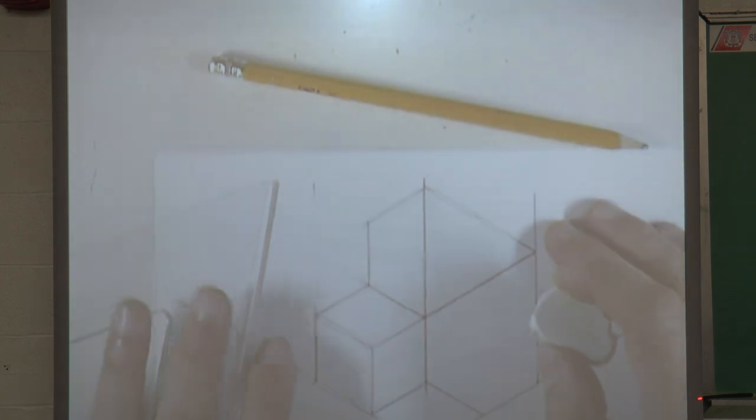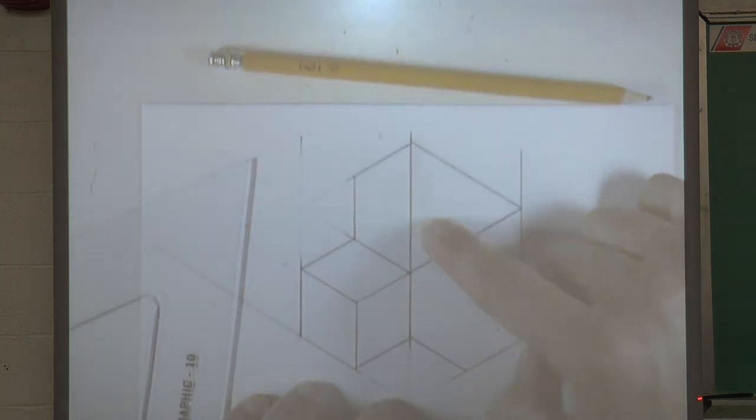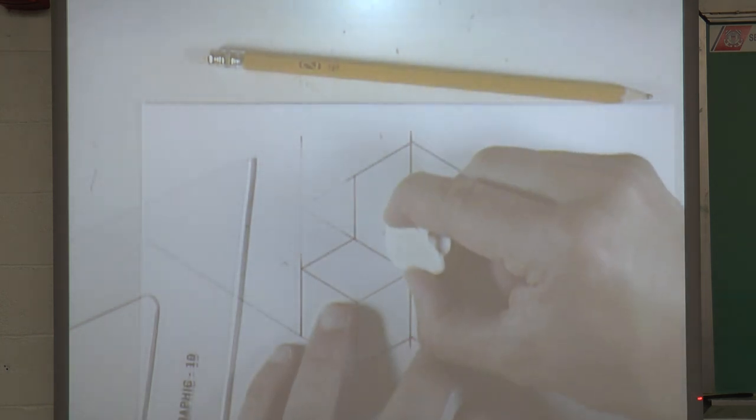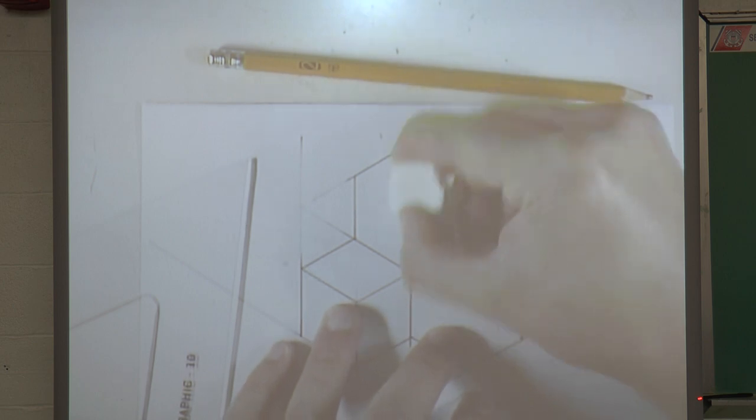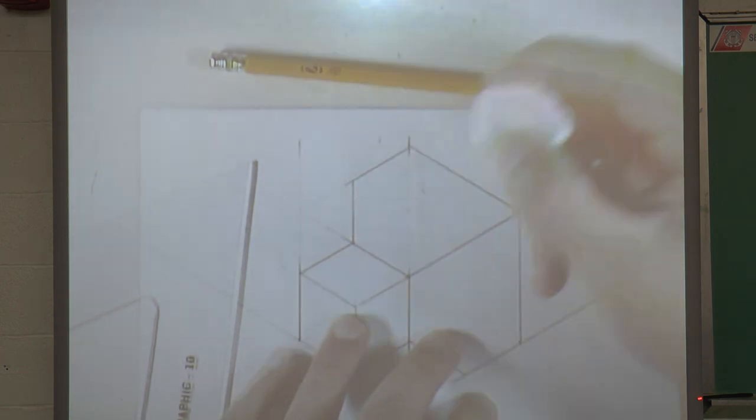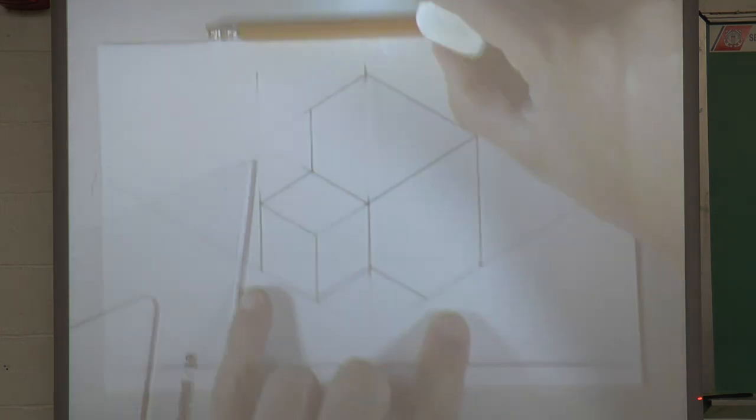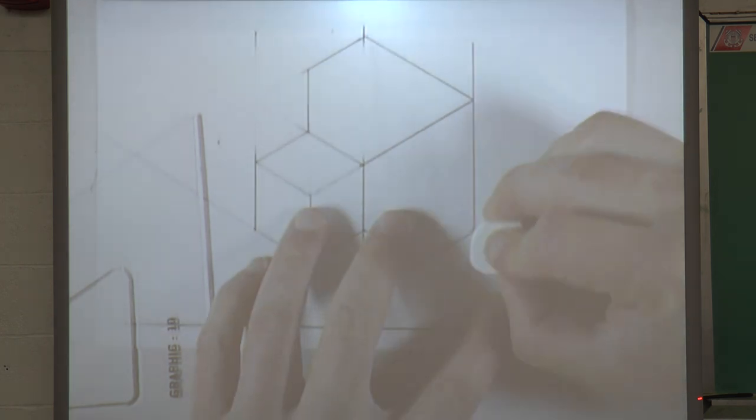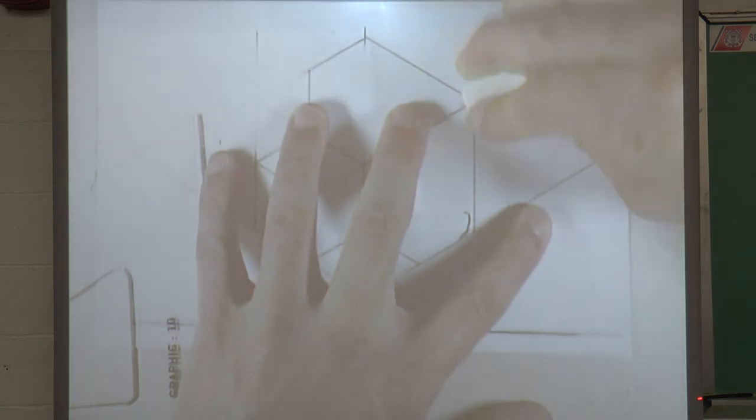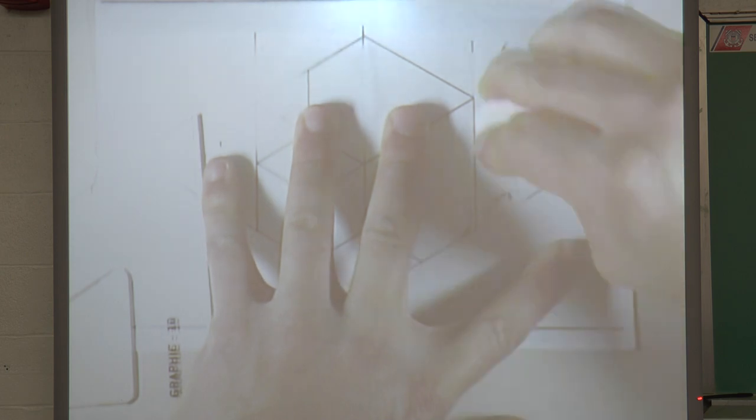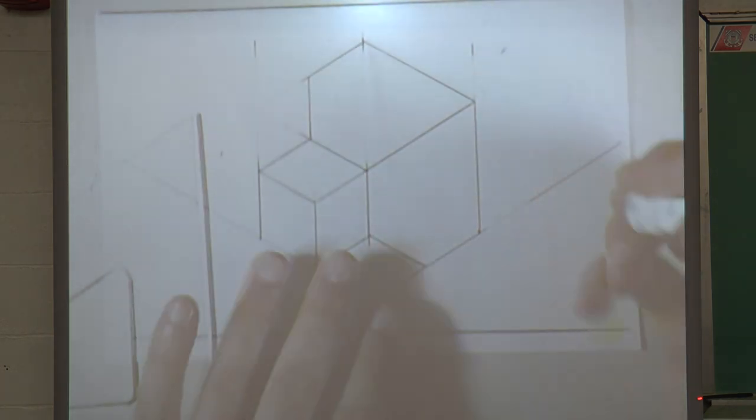Now you might be saying to yourself, wait a minute, I still have this line in here. What happened? Well, I didn't erase it when I made my layout box. If you didn't do it then, do it now. It's only going to make things more complicated. Same with the other lines that you don't need. If you don't need them, erase them. First of all, it's wrong. Second of all, it just is more confusing.